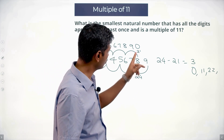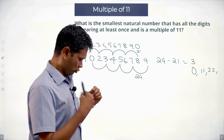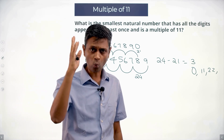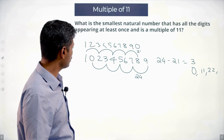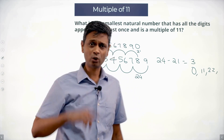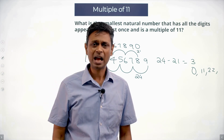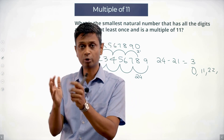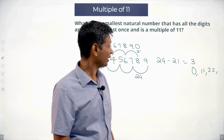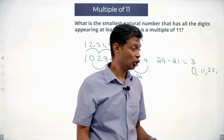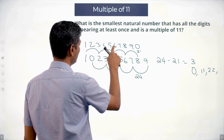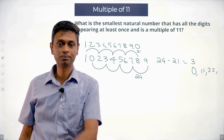The test of divisibility for 11 says: add digits in even positions, add digits in odd positions, find the difference. If the difference is either 0 or a multiple of 11, we've got a number that's a multiple of 11. Adding the digits in one group gives 21, the other gives 24. All digits together add up to 45, which is an odd number. So if I split them into two groups, the difference can never be 0.